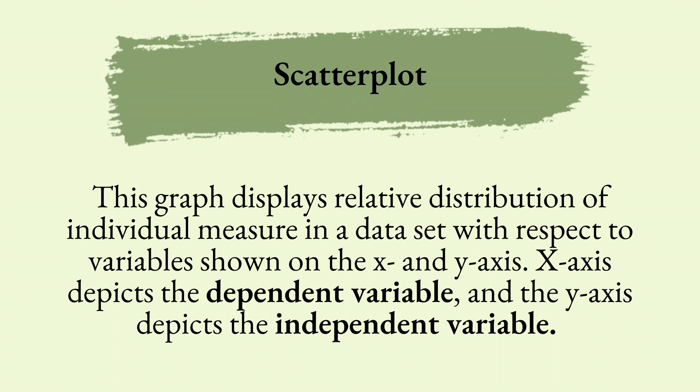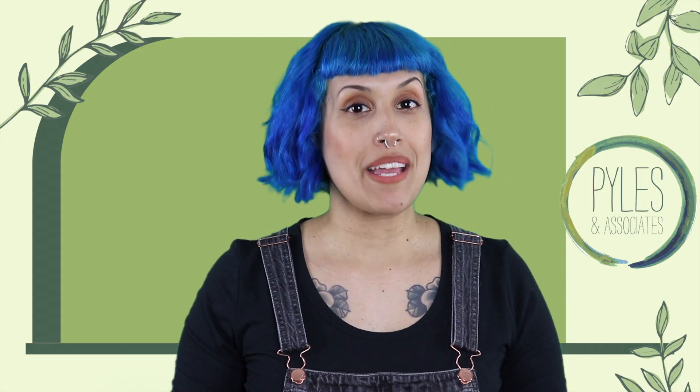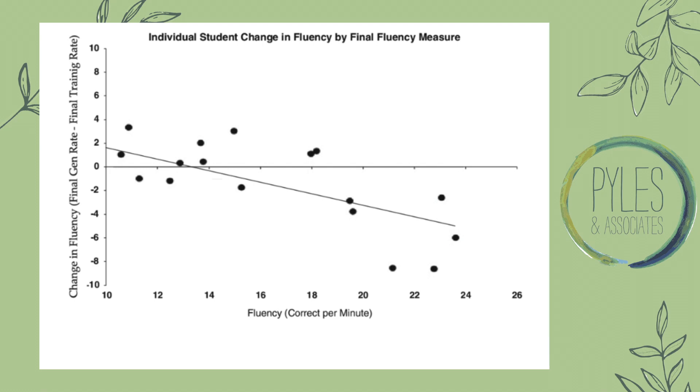Up next is a scatter plot — a graph that displays the relative distribution of individual measures of a data set with respect to variables shown on the x and y-axis. The x-axis depicts the dependent variable and your y-axis depicts the independent variable. A scatter plot is best used for displaying how much change within the value of a variable on one axis correlates to the changes in the value of the other axis.